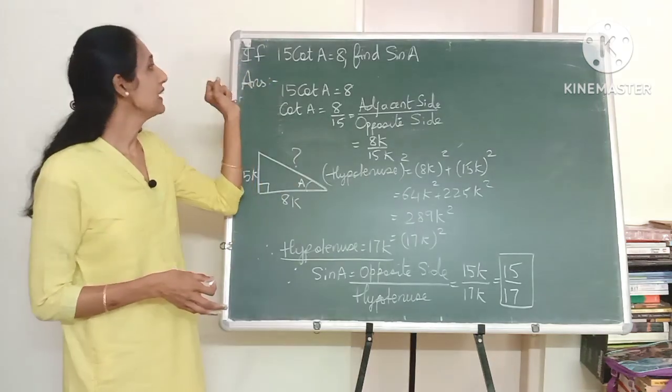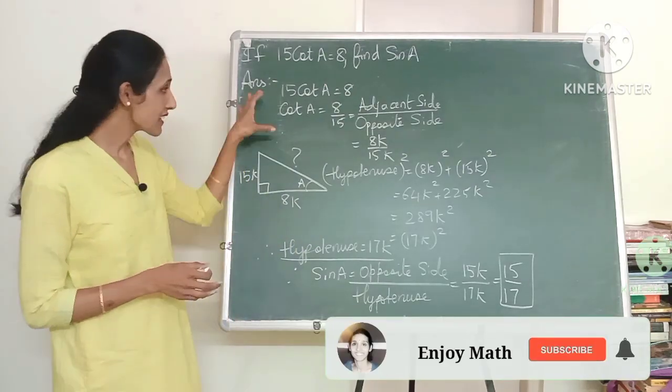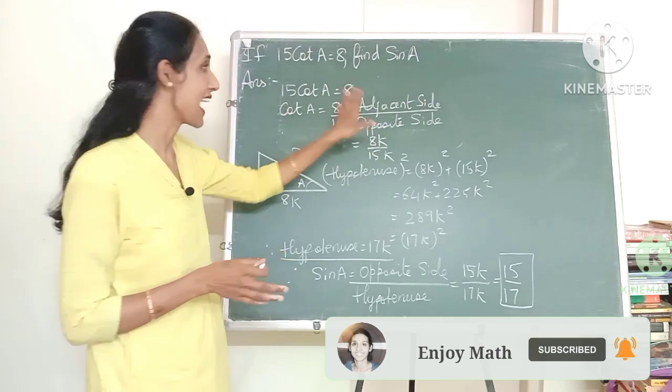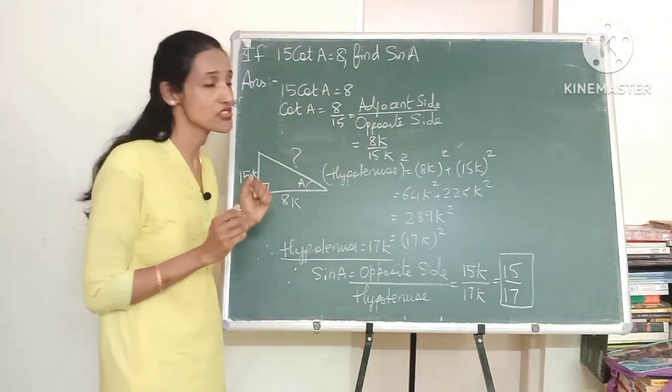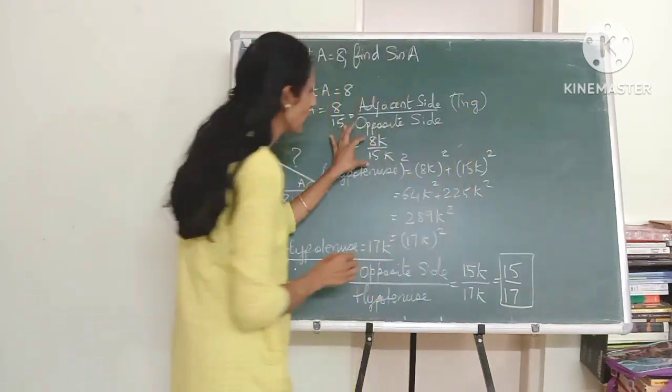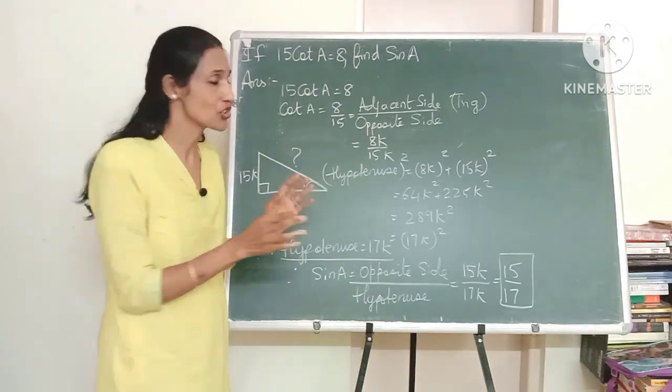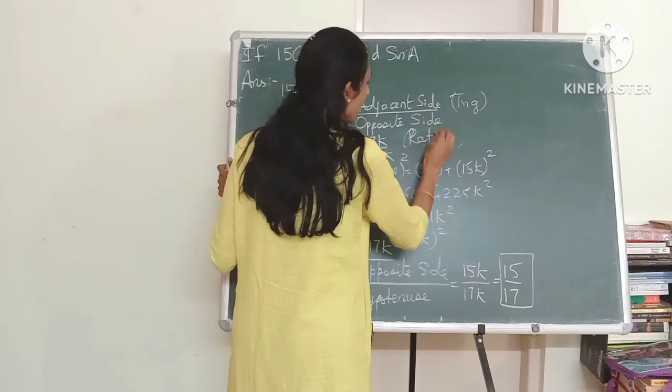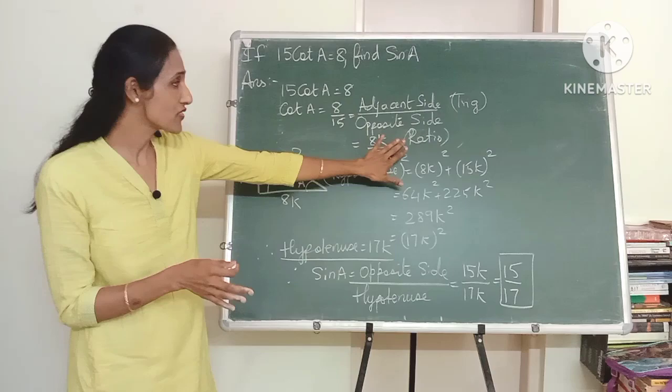So in this example if 15 cot A is 8 you have to find a value of sine A. So in the first step as you can see we have applied the cot formula that cot is adjacent side upon opposite side. So which concepts have we used here? Yes we have used trigonometry concept here. Now can you guess what is being done in the second step? Yes we have made it as a ratio, so you need to know about ratio otherwise we will be left wondering how we got the k in this step. So ratio is used here.